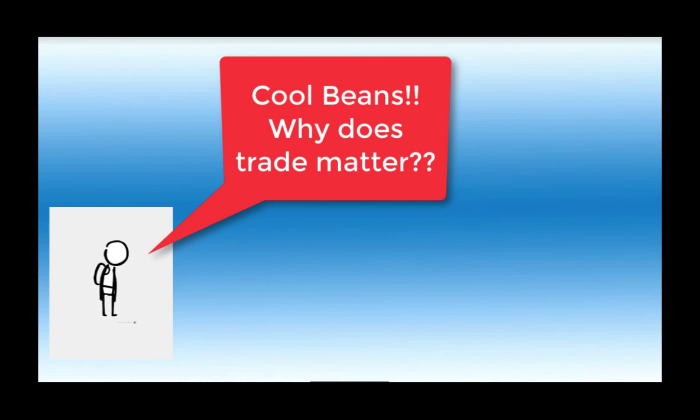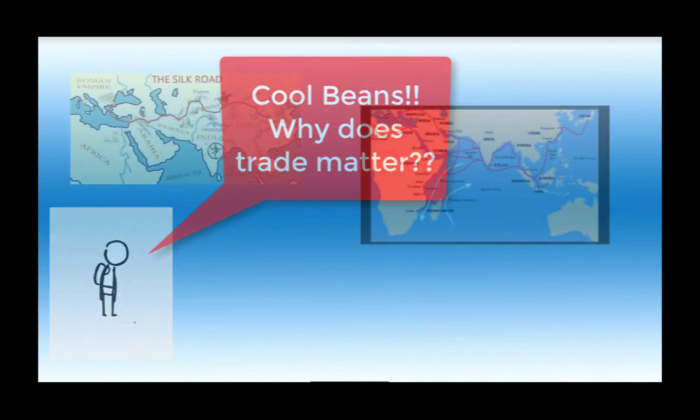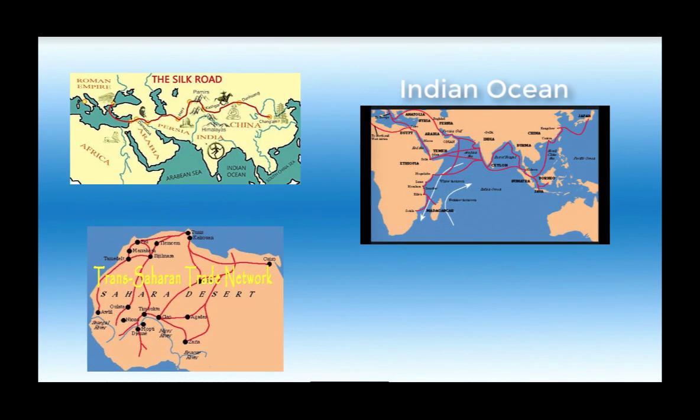Trade relationships change everything — from politics to social order to cultural mixing to environmental effects. The three biggest trade routes before the era of European exploration are the Silk Roads, the Indian Ocean, and the Trans-Saharan. They connected people and made massive, revolutionary changes within societies.